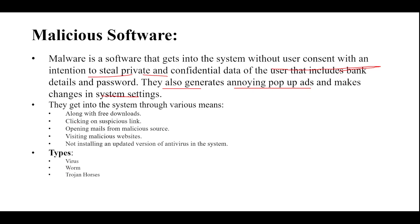Malware can enter our system through several ways: first, along with free downloads — whatever data we download on a free basis can contain malware. Second, by clicking on suspicious links, email attachment links, or message links. Third, by opening emails from malicious sources, visiting malicious websites, not installing updated antivirus software, or not regularly updating the operating system.